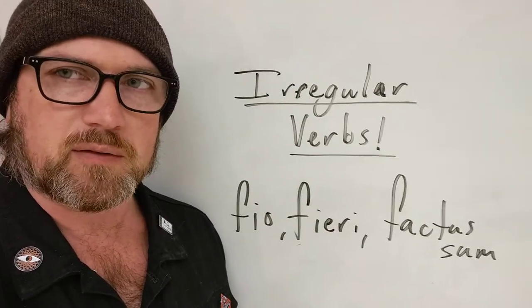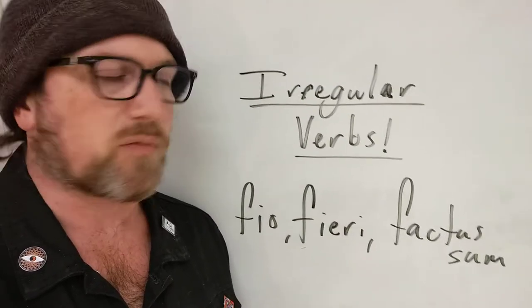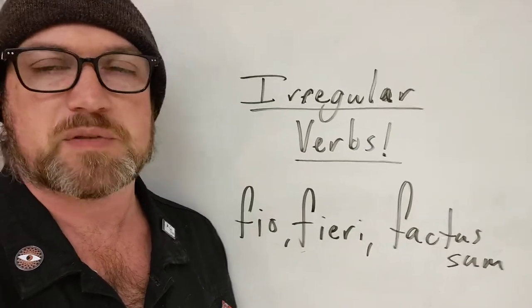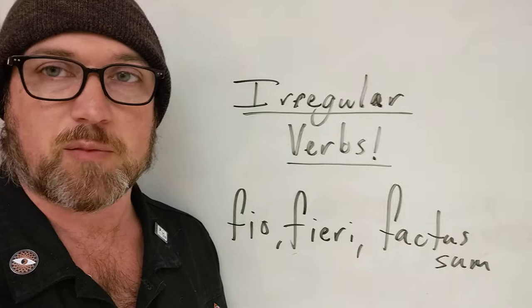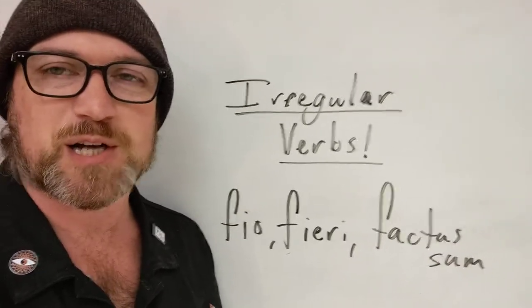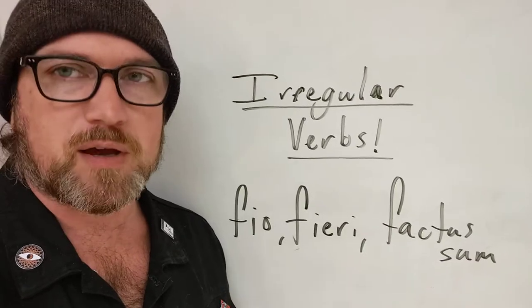If you've got the Latin 2 Ecce Romani book, those are the two chapters to look for fio and malo in. If you don't have an Ecce Romani book, look it up wherever you want or just listen to me talk about it.